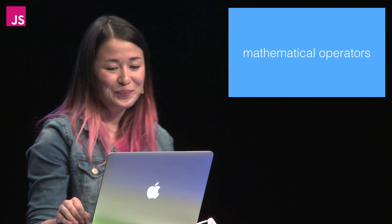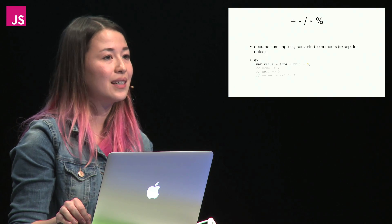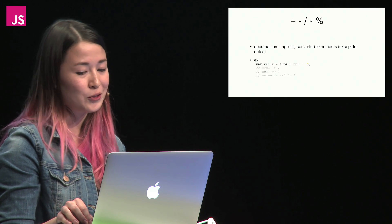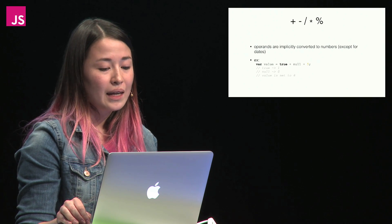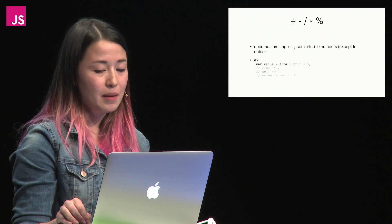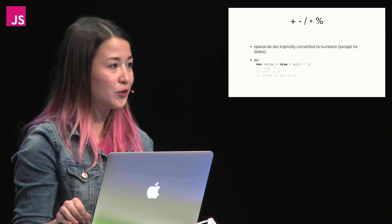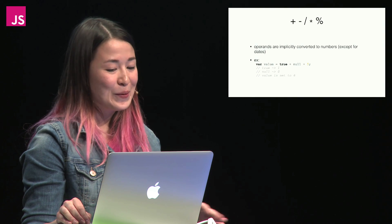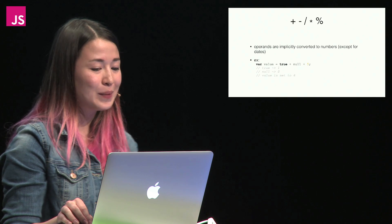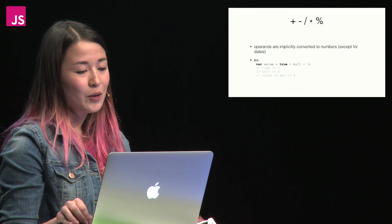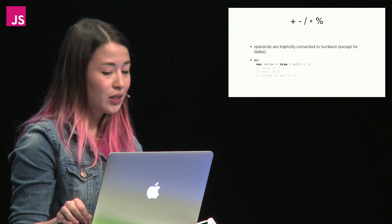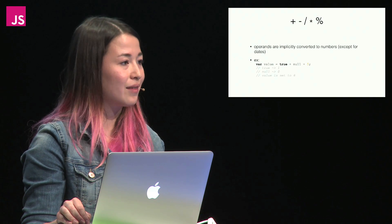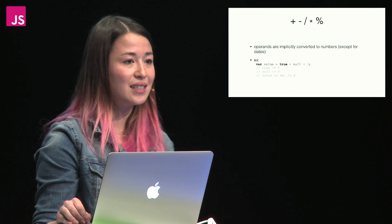Mathematical operators — addition, subtraction, multiplication, division, and the modulo operator. Operands are implicitly converted to numbers, except for dates, which for some reason are converted to strings. In this example, var value equals true + null + 5. Going from left to right, true is converted to 1, null is converted to 0, and 1 + 0 + 5 is, of course, 6. Value is set to 6.